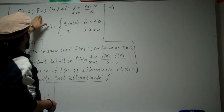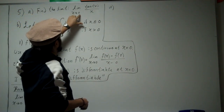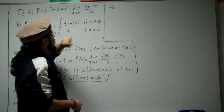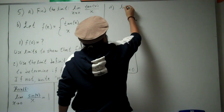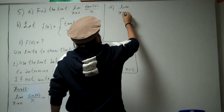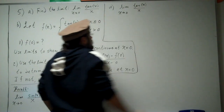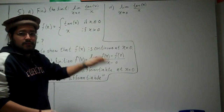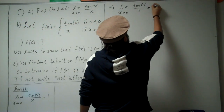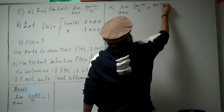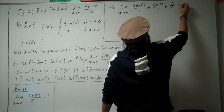For part a, we need to find the limit as x approaches 0 of tangent of x divided by x. What I usually do is plug in 0 first to see if it works. Tangent of 0 is 0, and we get 0 over 0, which is undefined. So that means we need to do more work.